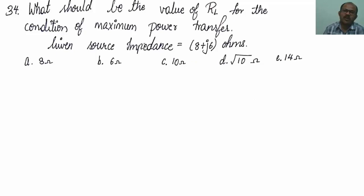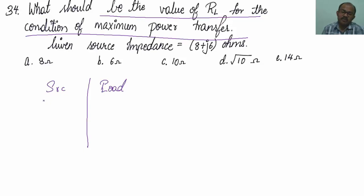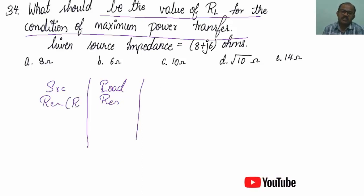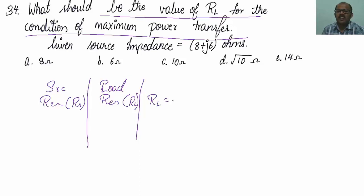Let us solve the 34th question. What should be the value of RL for maximum power transfer? We know there are 3 cases. Case 1: if the source is a pure resistive network and the load is also pure resistive, with source impedance RS and load impedance RL, then RL should equal RS to achieve maximum power transfer.